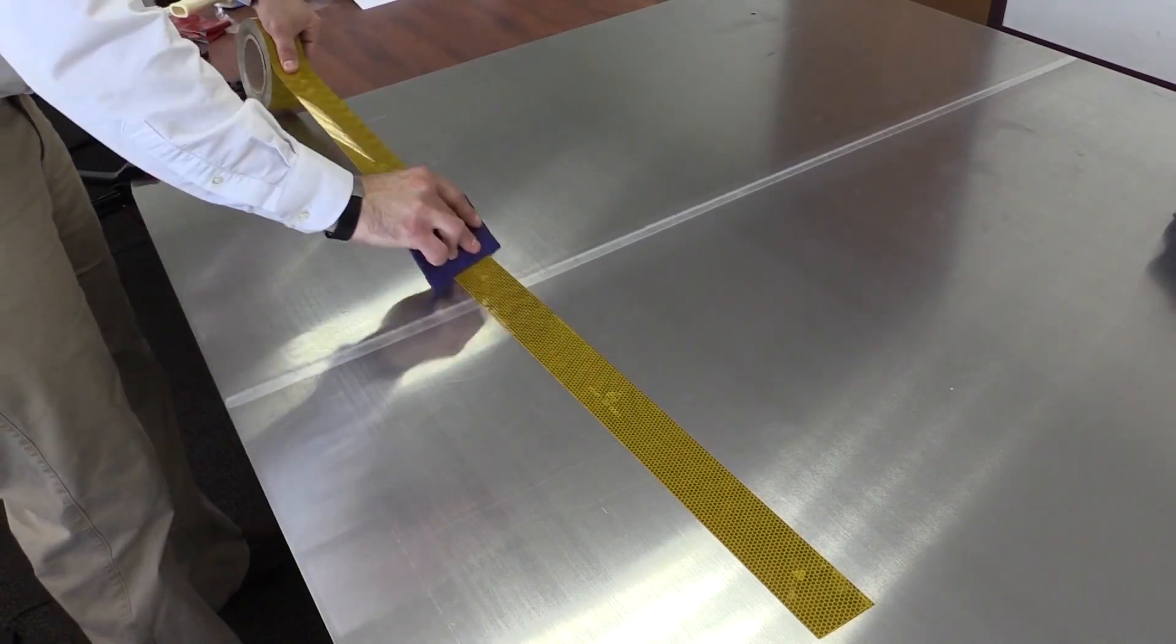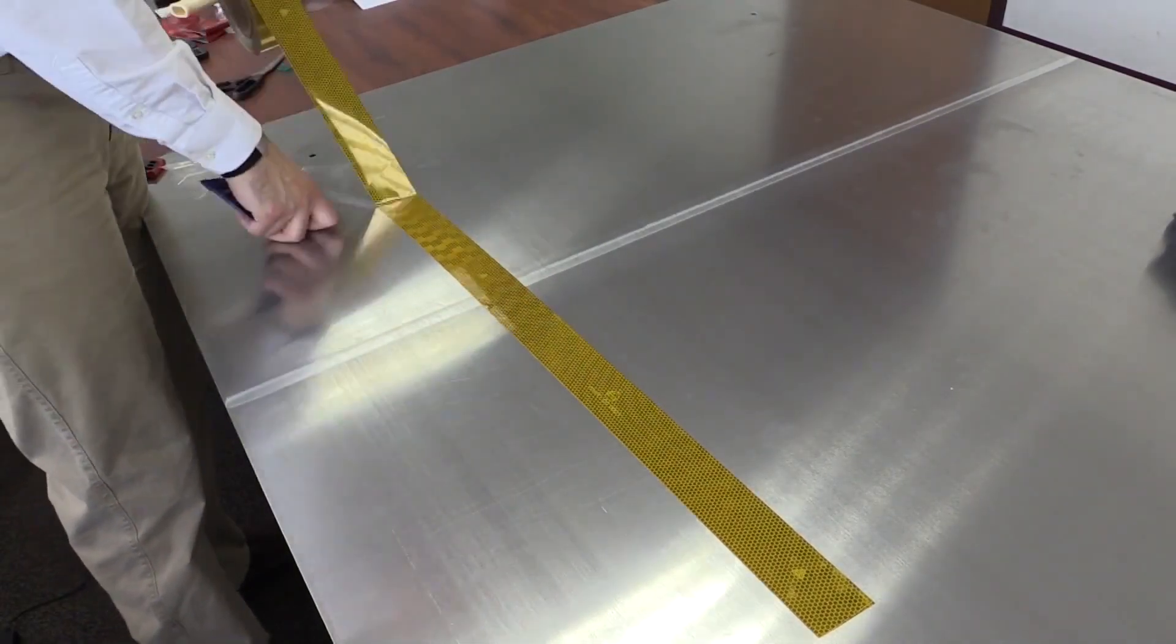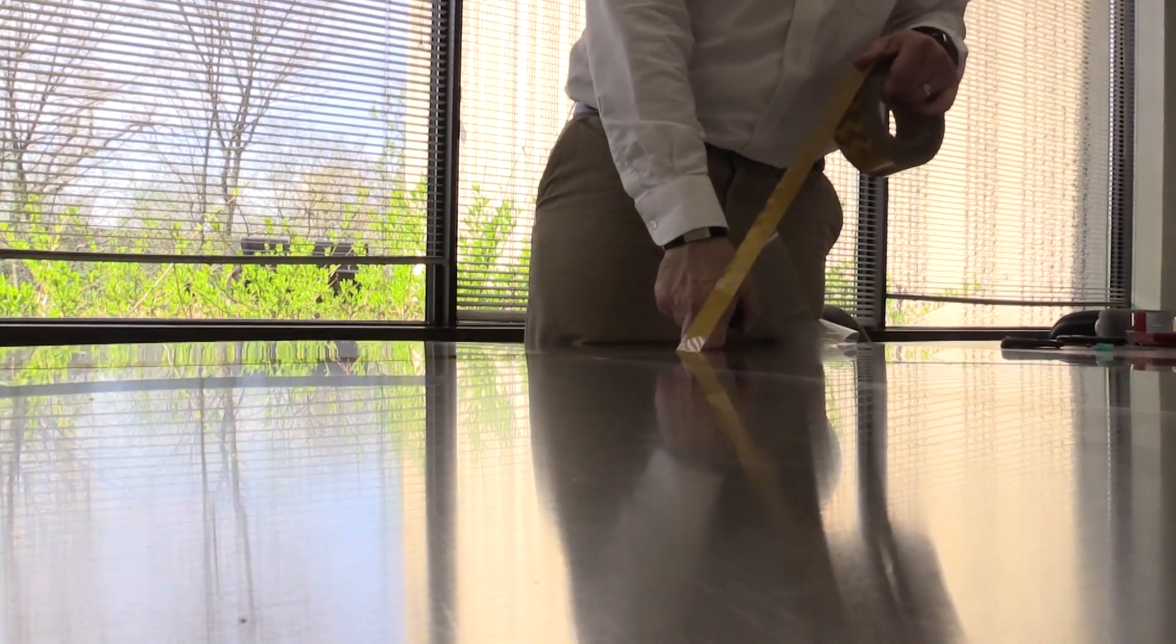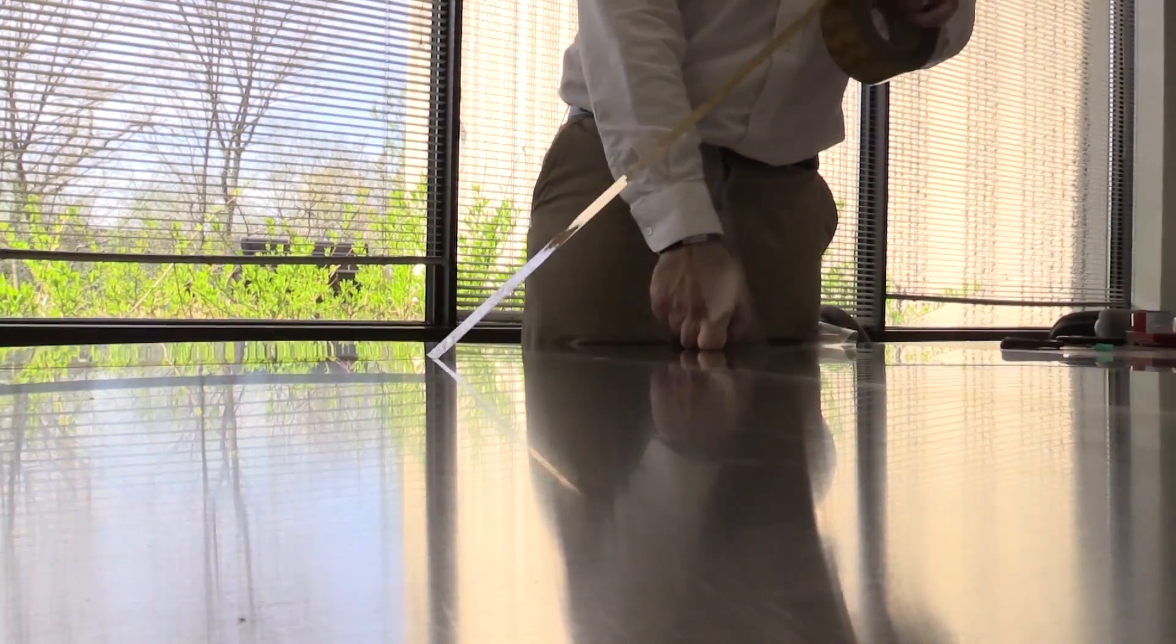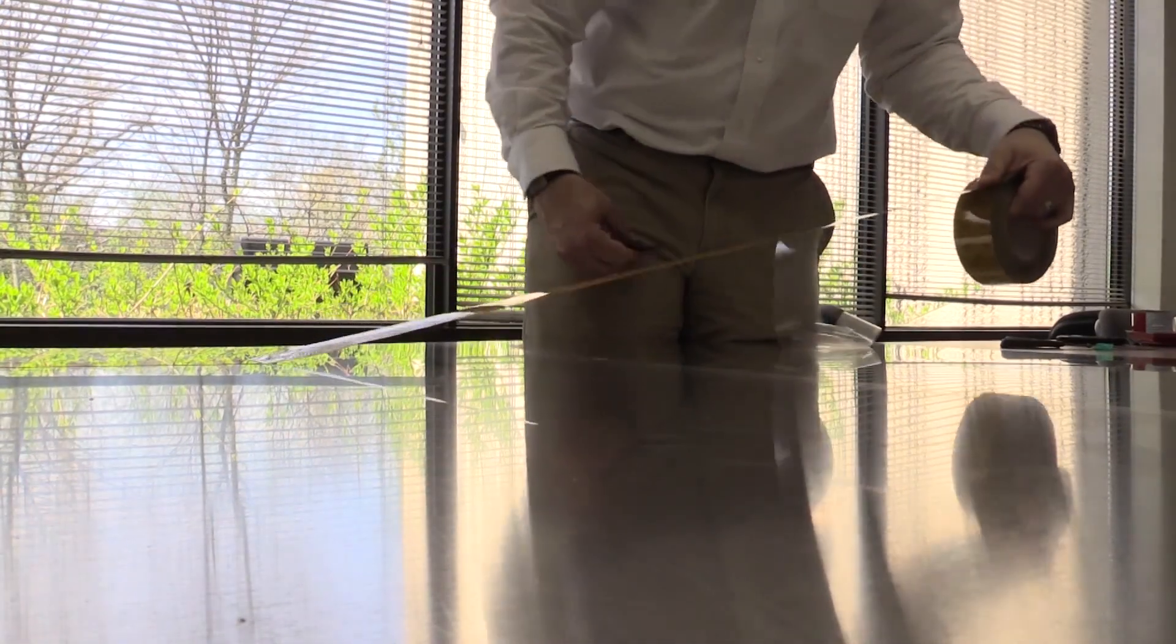And if during the process your tape gets askew somewhat and you want to reposition, you can simply lift it up within a couple minutes of application. You want to do it at a relatively low angle, you know 45 degrees or less.